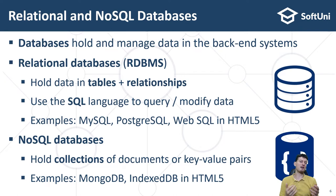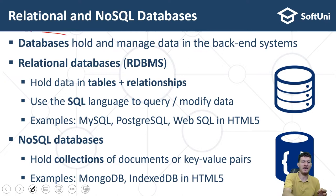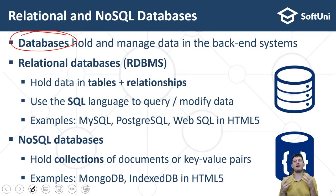Key-value pair databases such as Redis and Amazon DynamoDB store keys mapped to values — also known as dictionaries. They support fast search by key, but storing collections of data is less flexible. Key-value data storage systems are good for organizing simple data — for example, a phone book. Software engineers must have at least basic database skills.